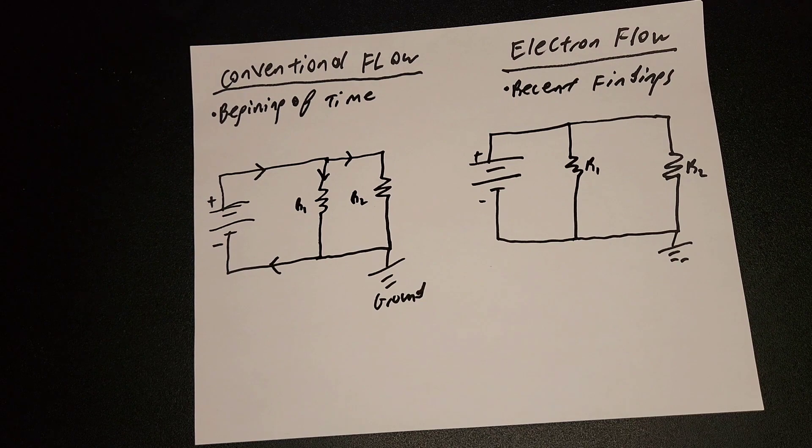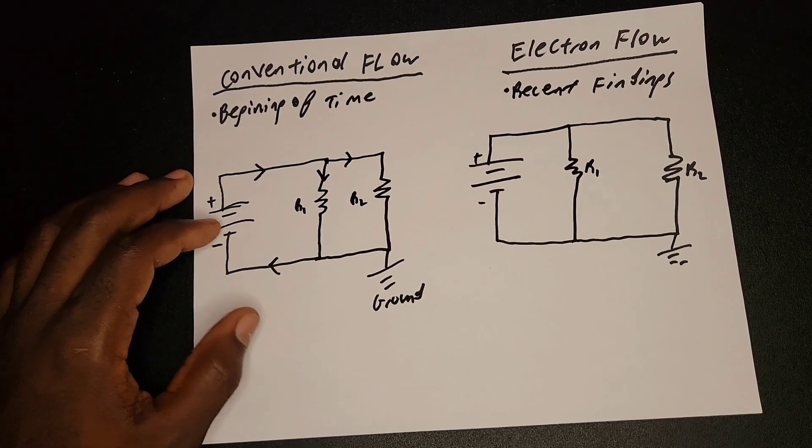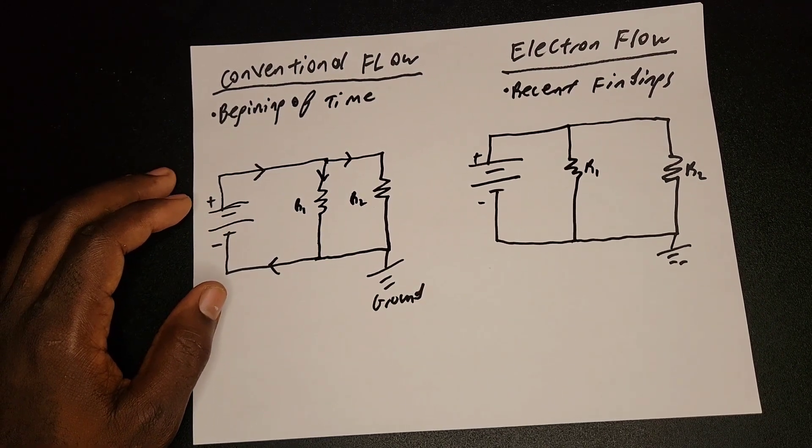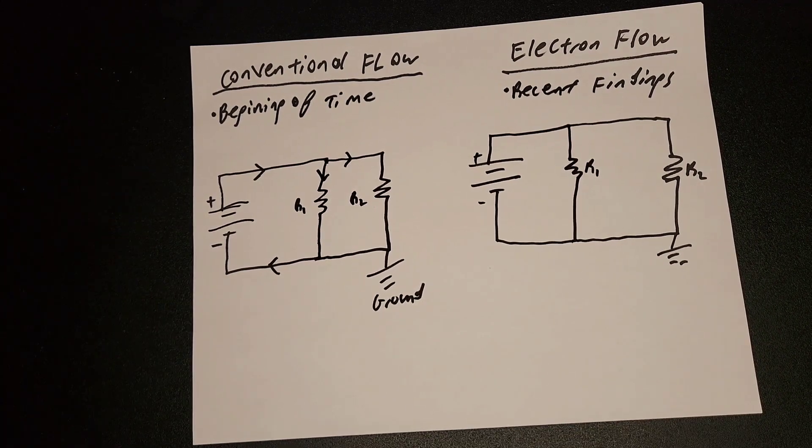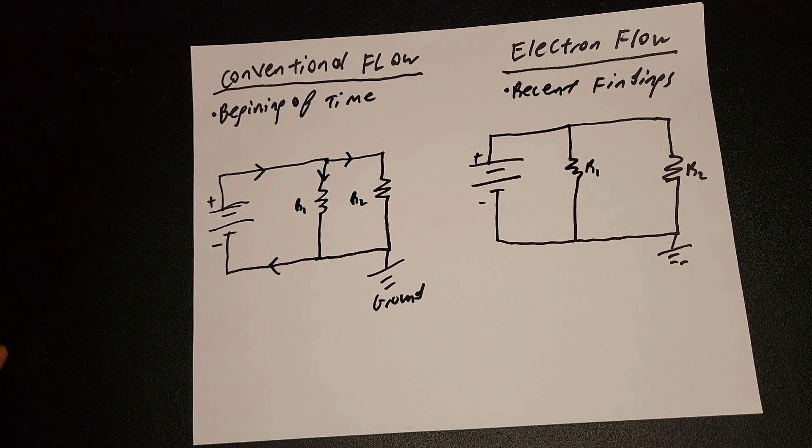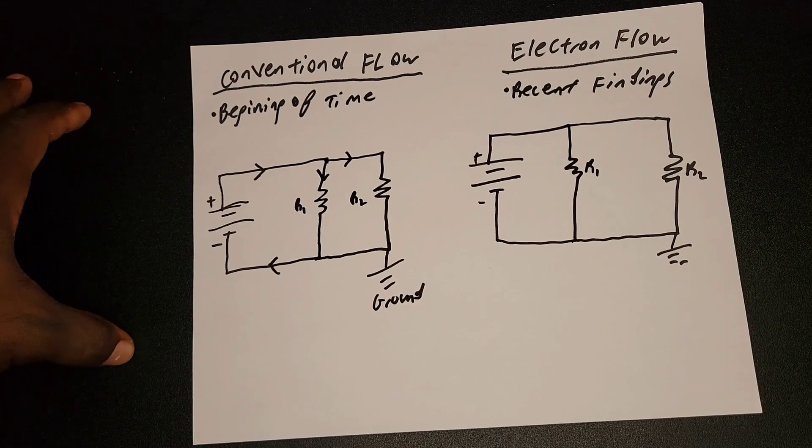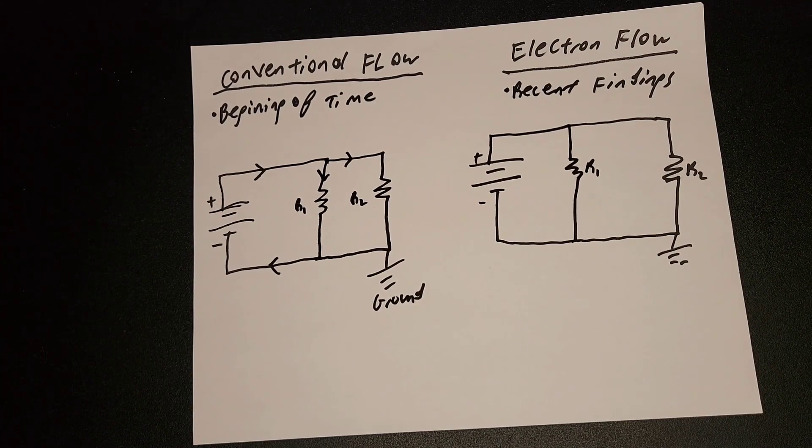However, what happens when current flows? So when current flows, what actually happens is that electrons move. Electrons move. But in which direction do electrons move?